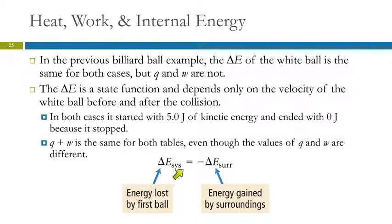Change in energy is a state function — it depends only on the velocity of the white ball before and after collision. The sum Q + W = ΔE is the same for both tables, but the values of Q and W are different because heat and work depend on the process. The energy lost by the white ball is equal but opposite in sign to the energy gained by the surroundings — which would include the pool table and the purple ball.